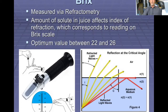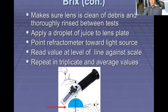A little bit about refractometry. The amount of solute in the juice affects the index of refraction, which corresponds to a reading on a BRIX scale. Optimally, we want to harvest our grapes between 22 and 26 degrees BRIX. When doing the measurements, make sure the lens is clean of debris and thoroughly rinsed between tests. Then apply a droplet of your juice to the lens plate, point the refractometer towards a light source — it works particularly well outdoors in sunlight — and read the value at the line against the scale. Repeat this several times if unsure to get an average value.